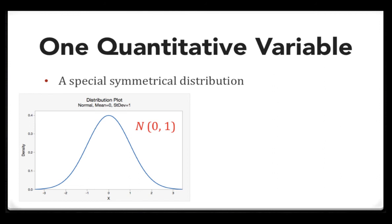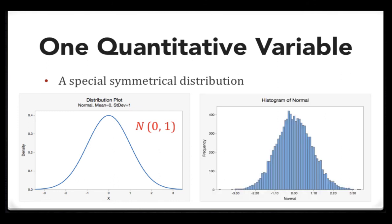The distribution that we see here is a probability distribution plot, so it's perfectly smooth. If we were to collect data from a sample and construct a histogram, the shape would not be perfectly smooth, but we would be able to see the shape of the normal distribution.